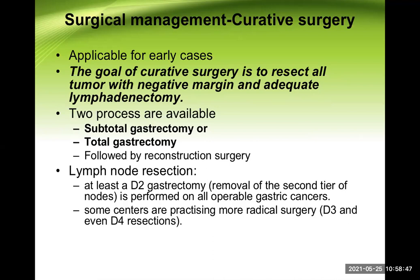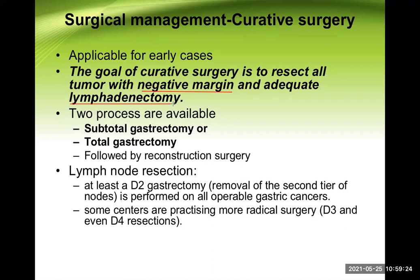Regarding curative surgery applicable for early cases: the goal is to resect all tumor with negative margins and adequate lymphadenectomy — sacrificing some normal area near the malignant site along with lymph node removal. Two types of procedures are available: subtotal gastrectomy and total gastrectomy, followed by reconstructive surgery.